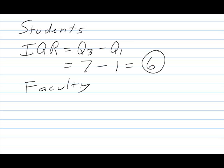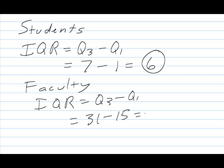For faculty, it's the same idea. It's still IQR is Q3 minus Q1. In this case the faculty Q3 value was 31. Q1 was 15. So that gives us a difference of 16.